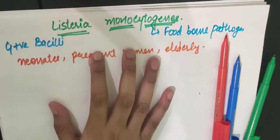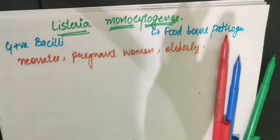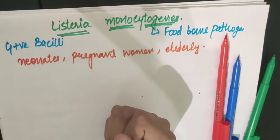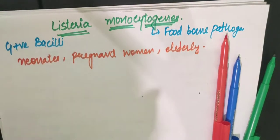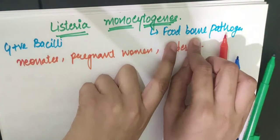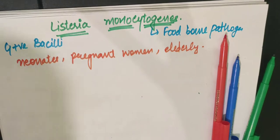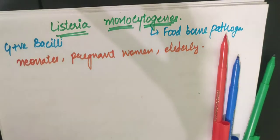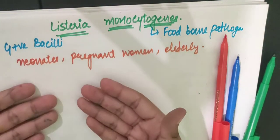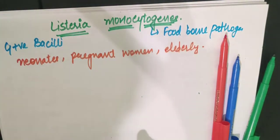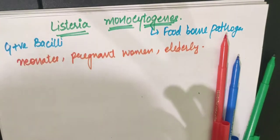If it affects pregnant women, it can cause abortion. The mode of transmission is food-borne. If a pregnant mother consumes contaminated food, it passes to the fetus — we call this vertical transmission.